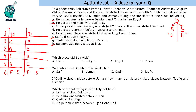Among Rashid and Pervez, one visited China and the other visited Denmark. Taufic visited a place before Pervez, so Pervez cannot be the first person to visit. That means Rashid will visit Denmark, since Denmark is the first place and Pervez cannot be first. So Rashid visits Denmark, and therefore Pervez visits China.